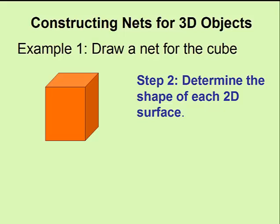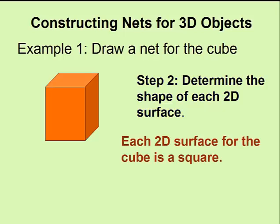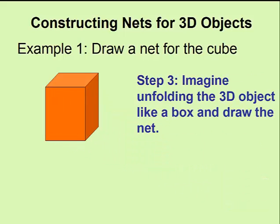Next, we need to determine the shape of our two-dimensional surfaces. For a cube, each surface is a square. Next, we will imagine unfolding our three-dimensional object and drawing each two-dimensional side.